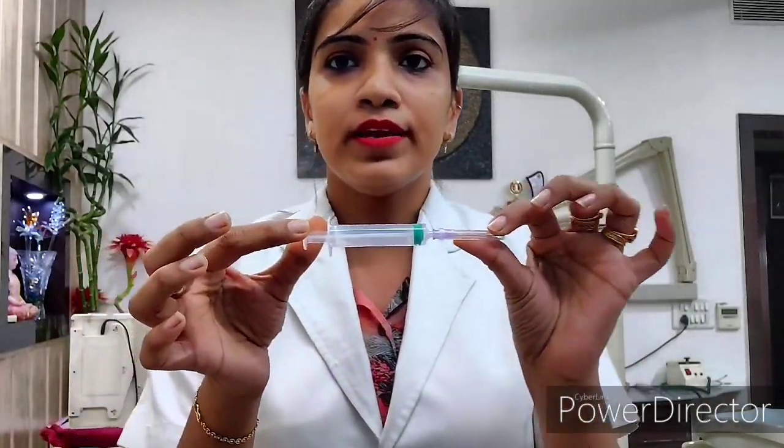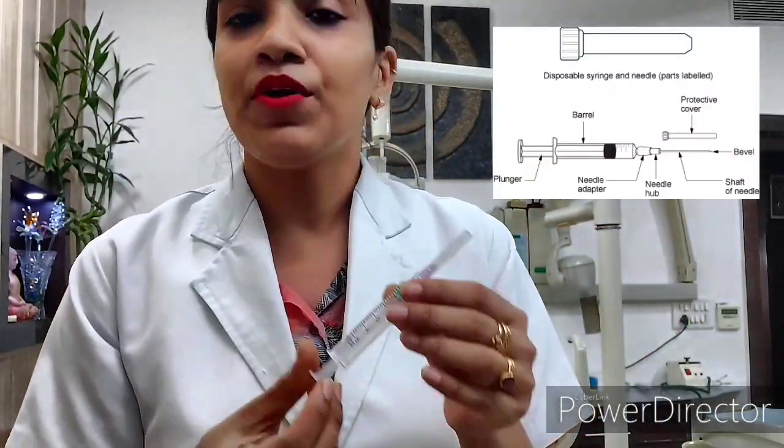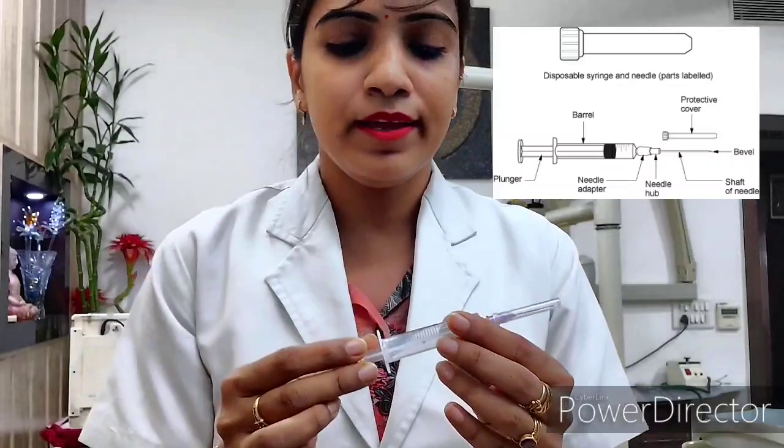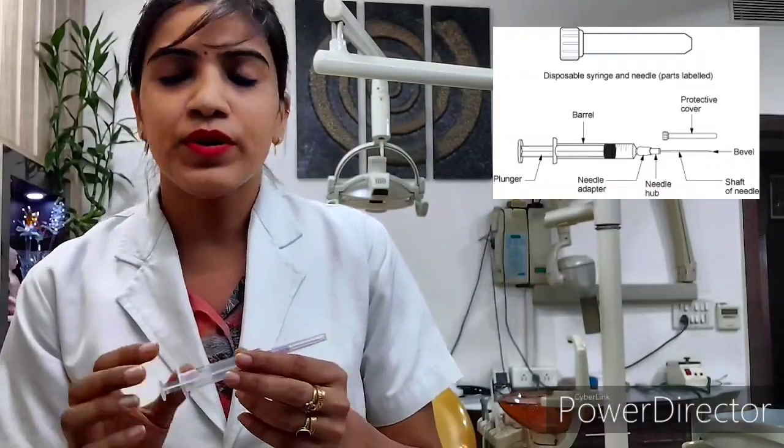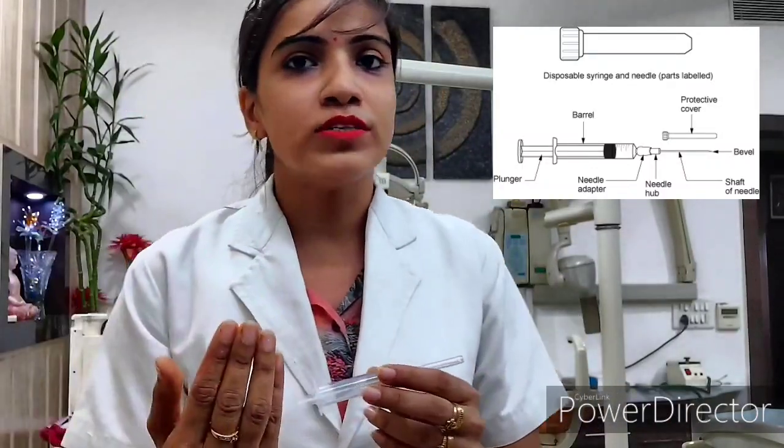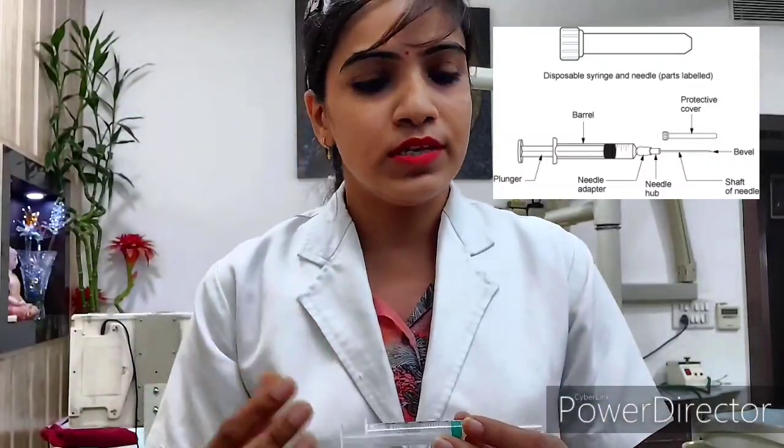So I am having a syringe — this is one, and this is another. So this is called a dental syringe. I am going to tell you about all syringes. This is our normal syringe, and this is a 5ml. But it depends on the quantity that you need.